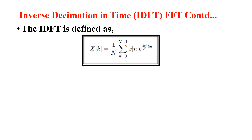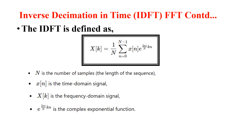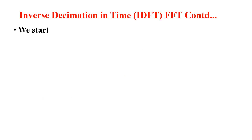The IDFT is defined as: x(n) = (1/N) × summation from k=0 to N-1 of X(k) × e^(j2πkn/N), where capital N is the number of samples, that is the length of the sequence. x(n) is the input time domain signal, X(k) is the frequency domain signal, and e^(j2πkn/N) is the complex exponential function known as the twiddle factor.